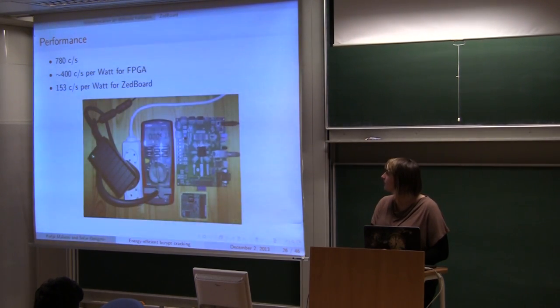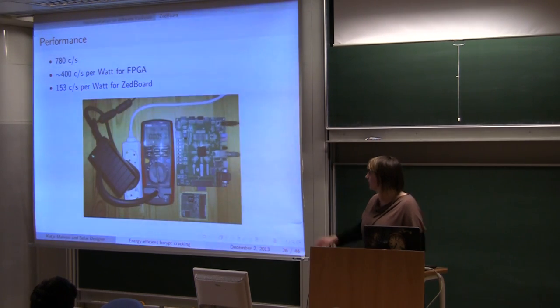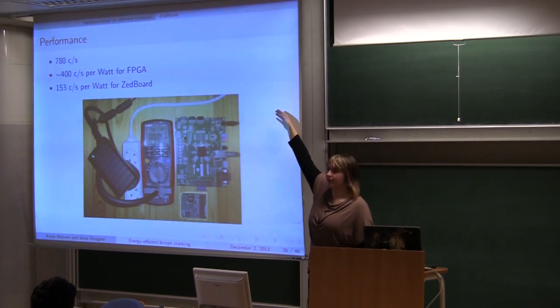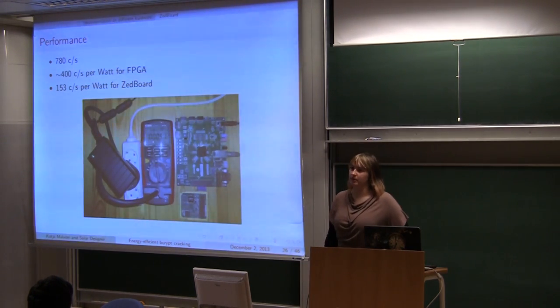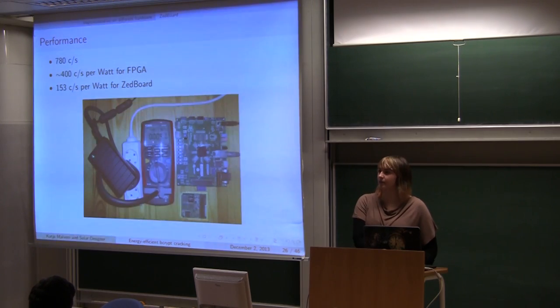So this is performance. Performance per watt. The second figure is only for FPGA. And the third one is for whole system with Z-board. So counting ARM cores for consumption as well.